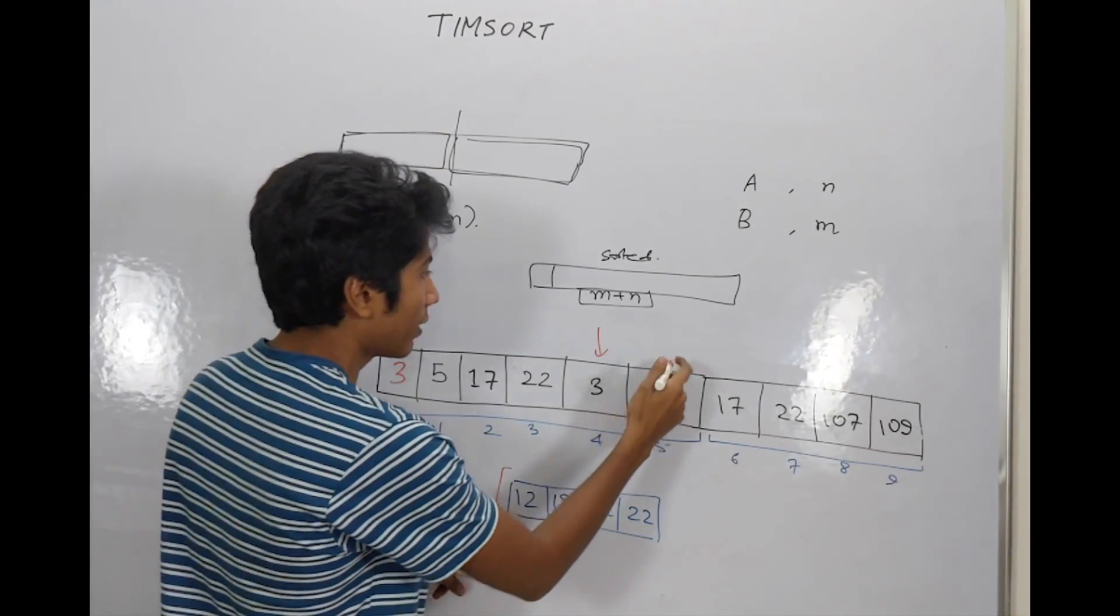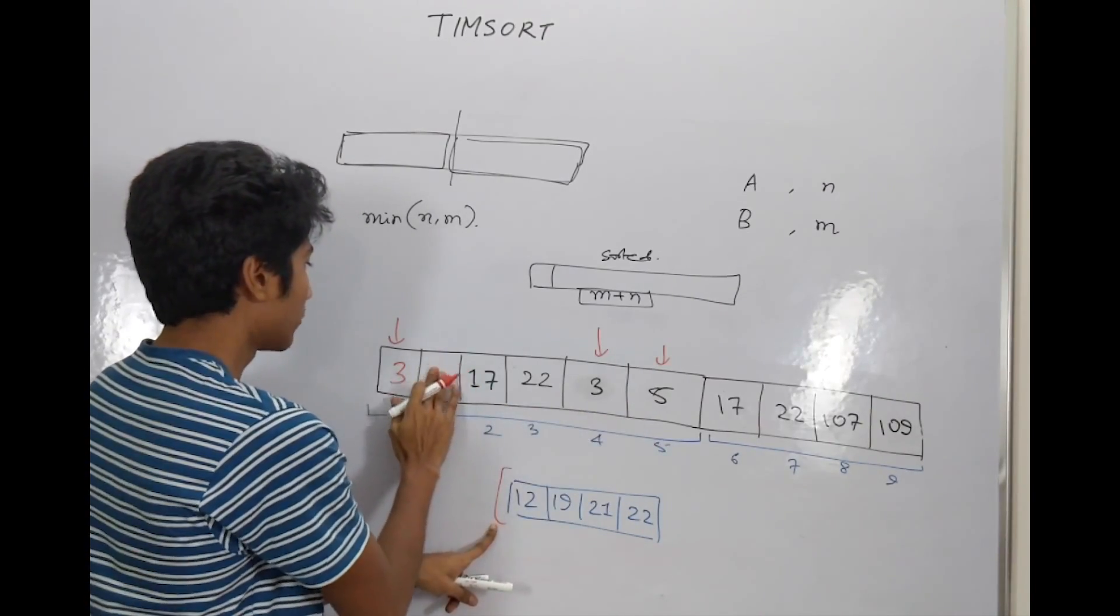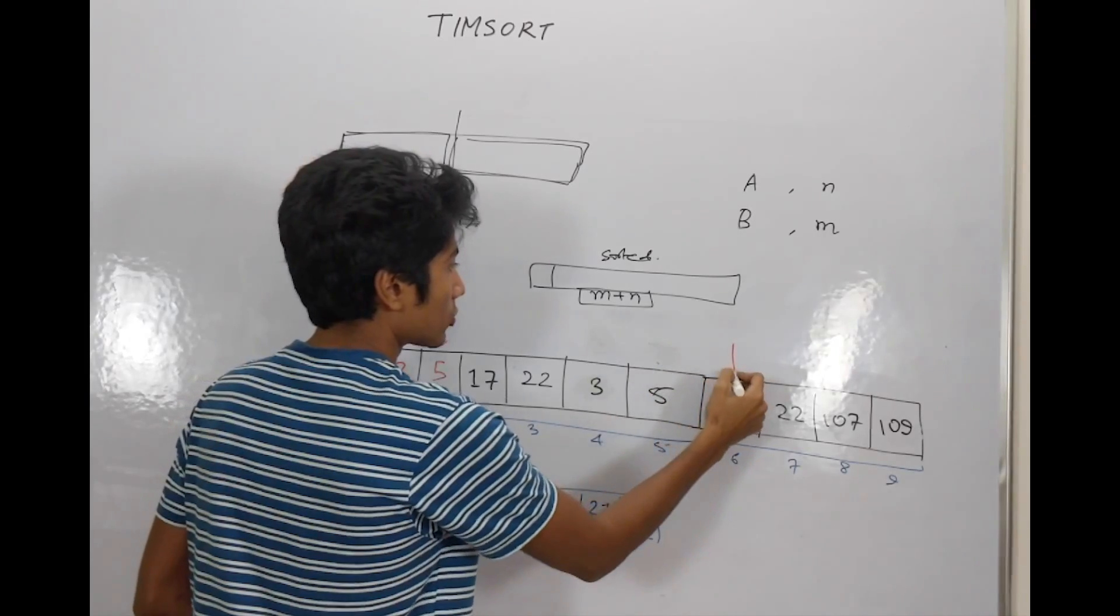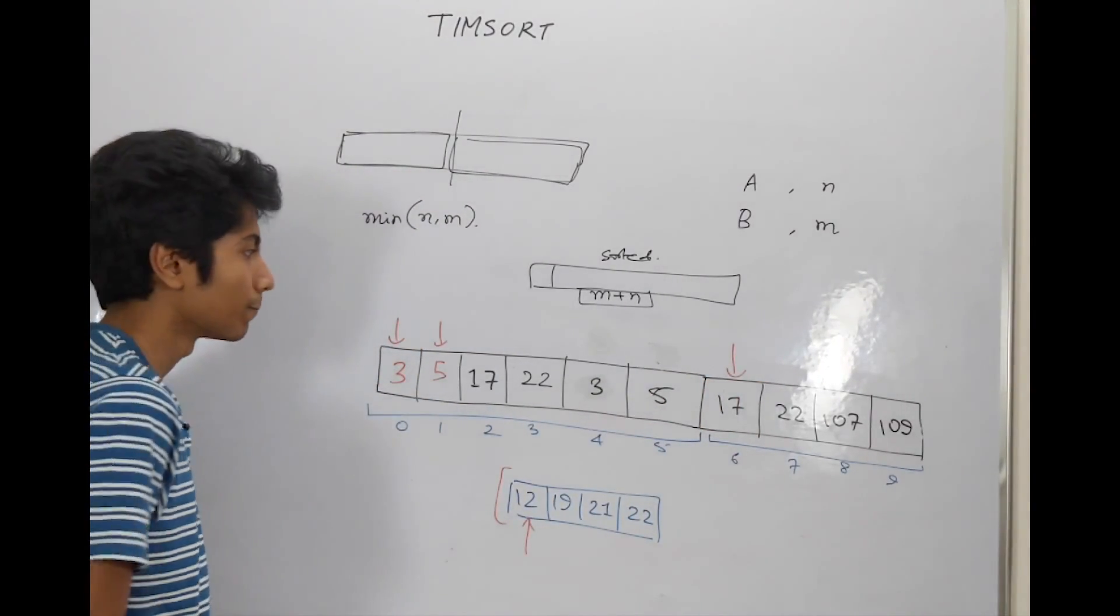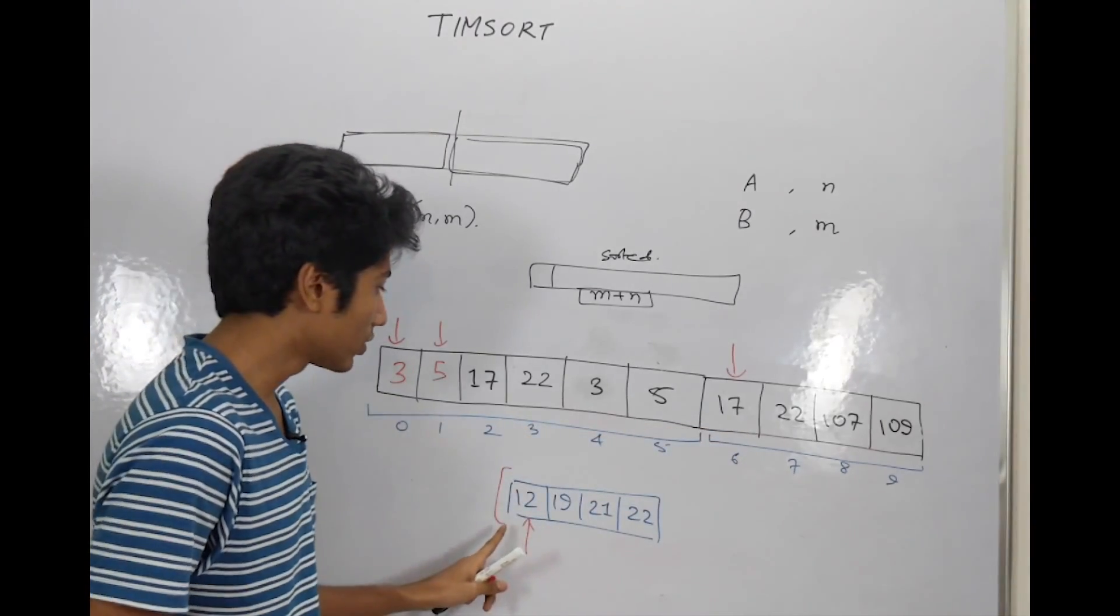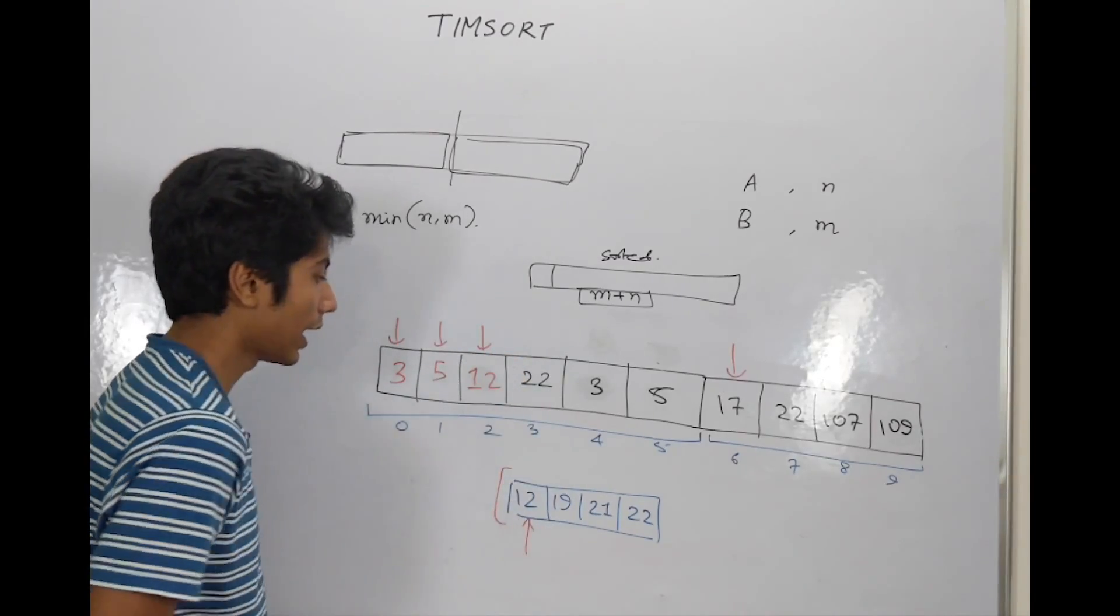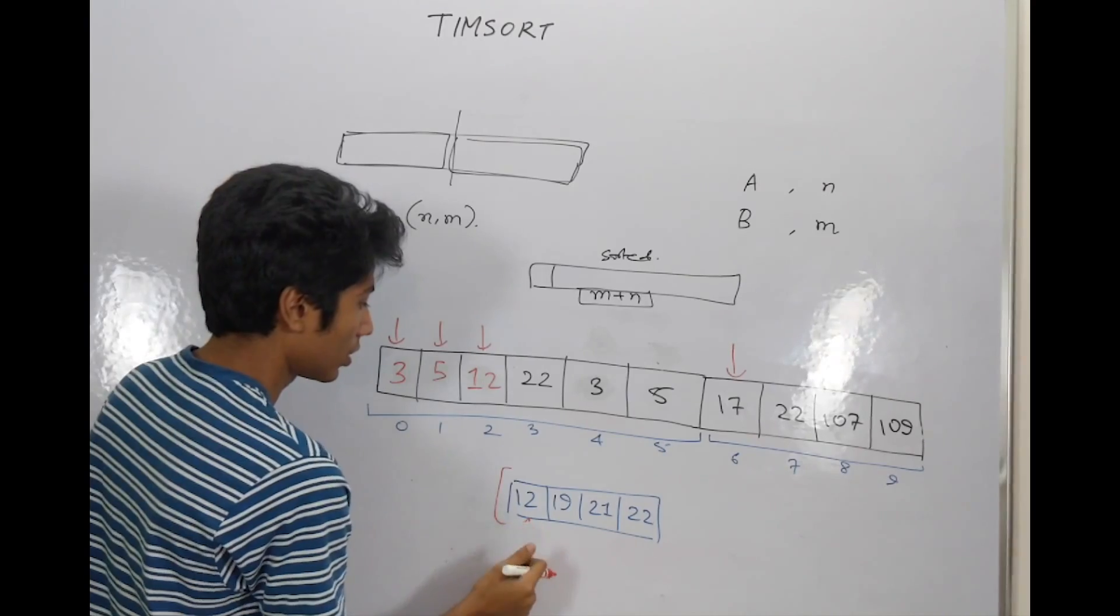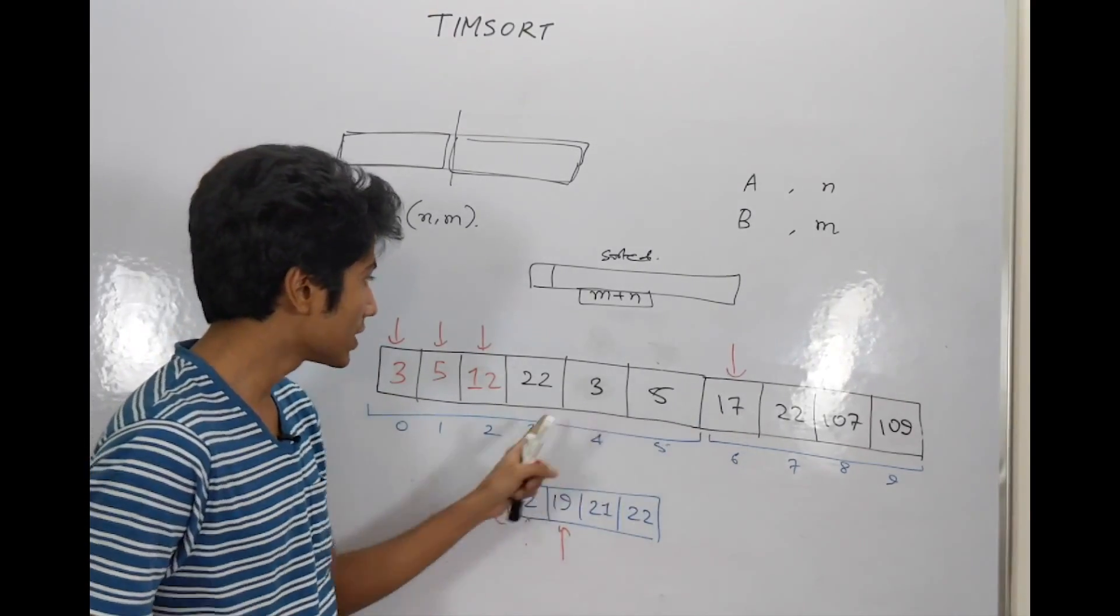So we populate the first index with value three. Similarly, now 12 and five are in a contest where five wins and comes over here. So this pointer has now been pushed to this point and 12 is still the smallest element in this array. 17 and 12, 12 wins.